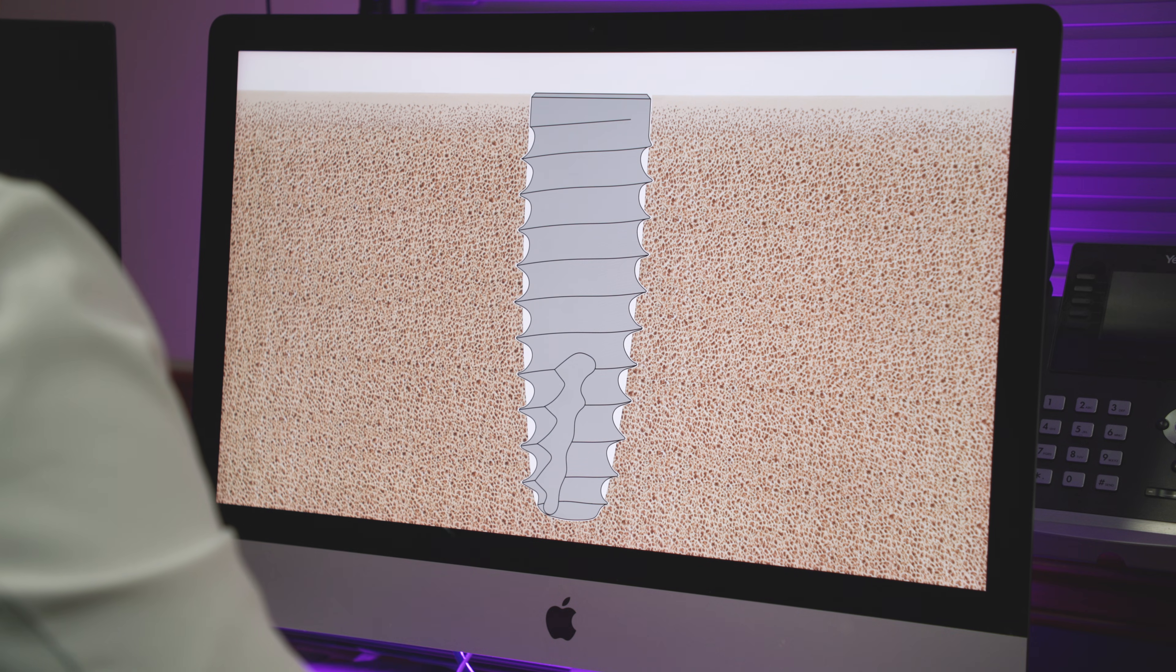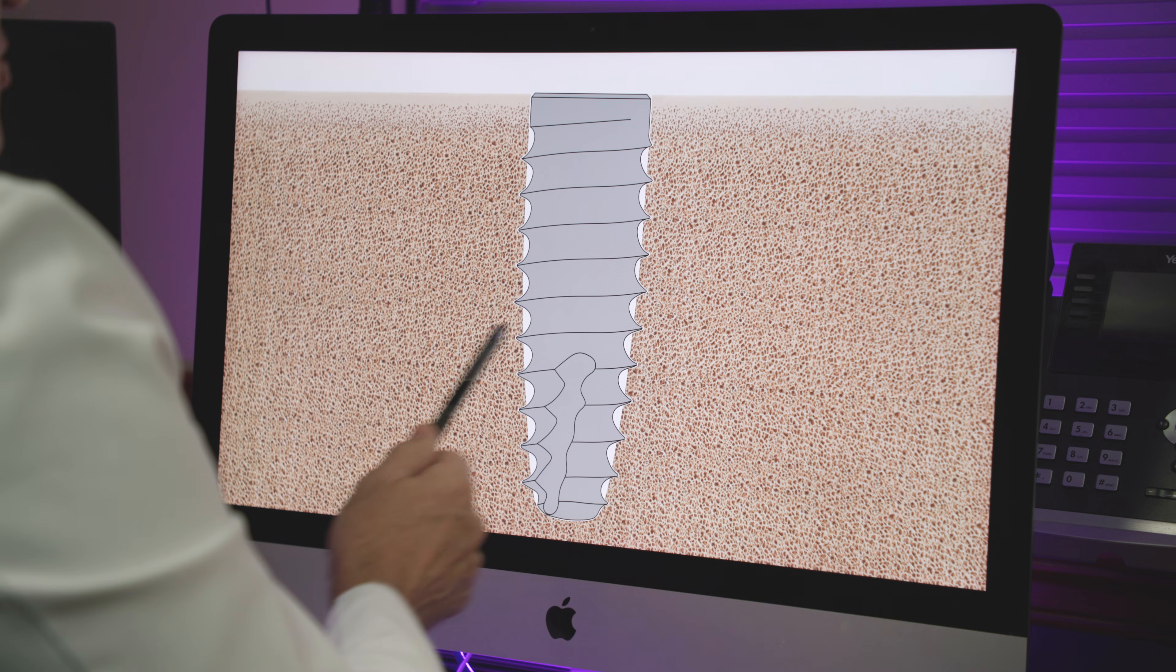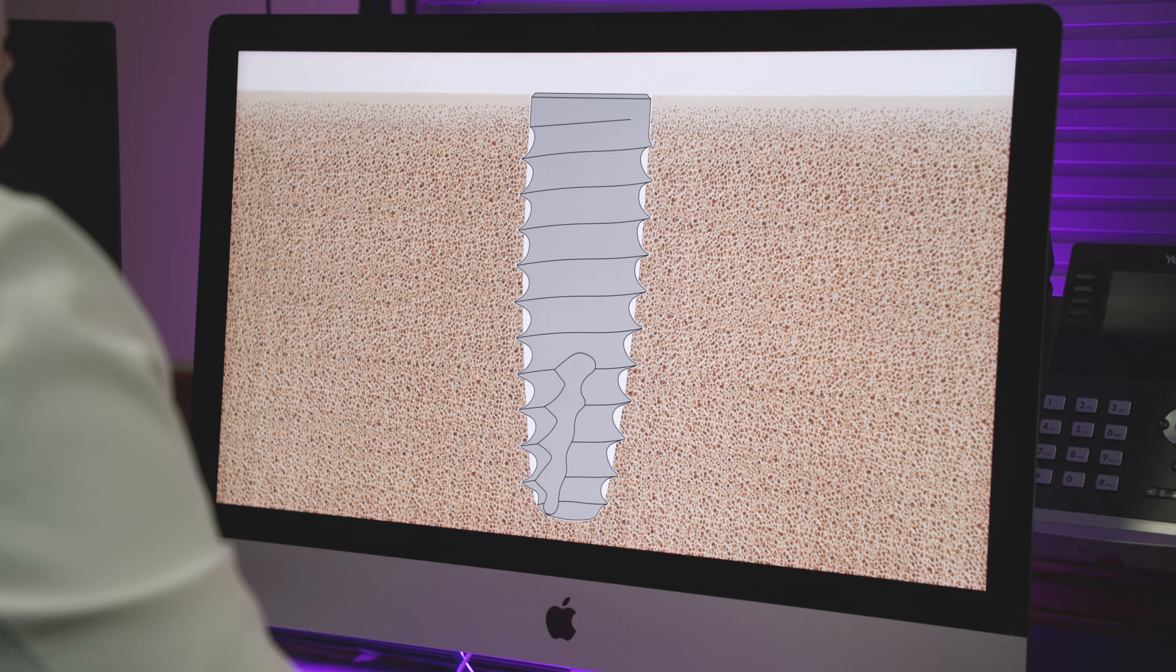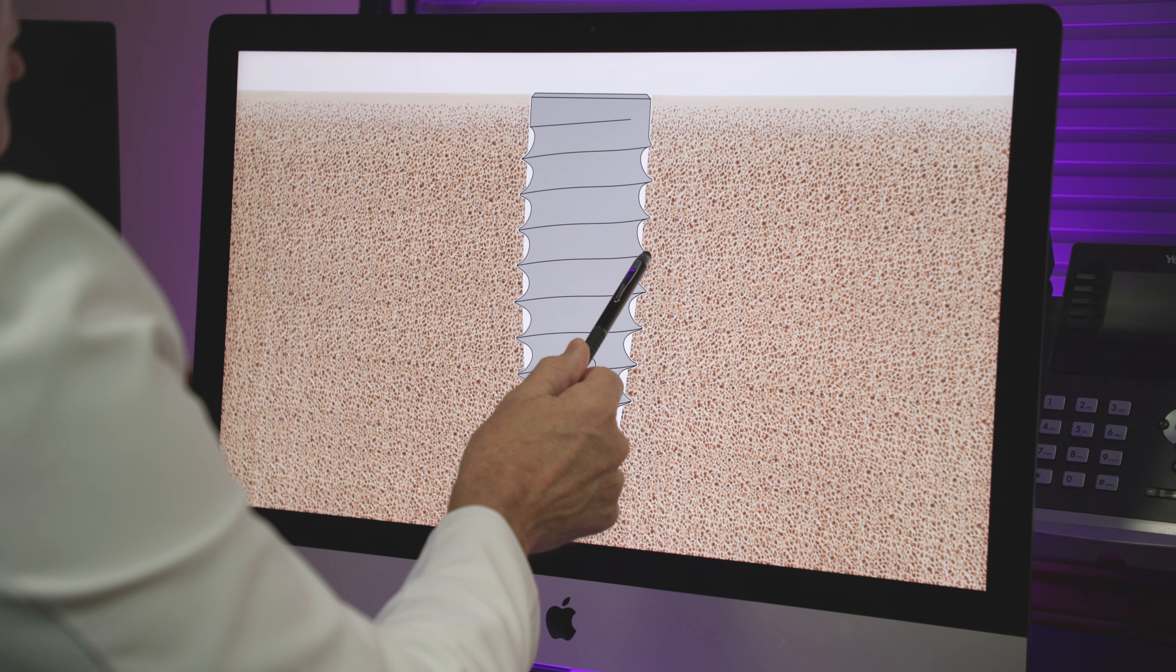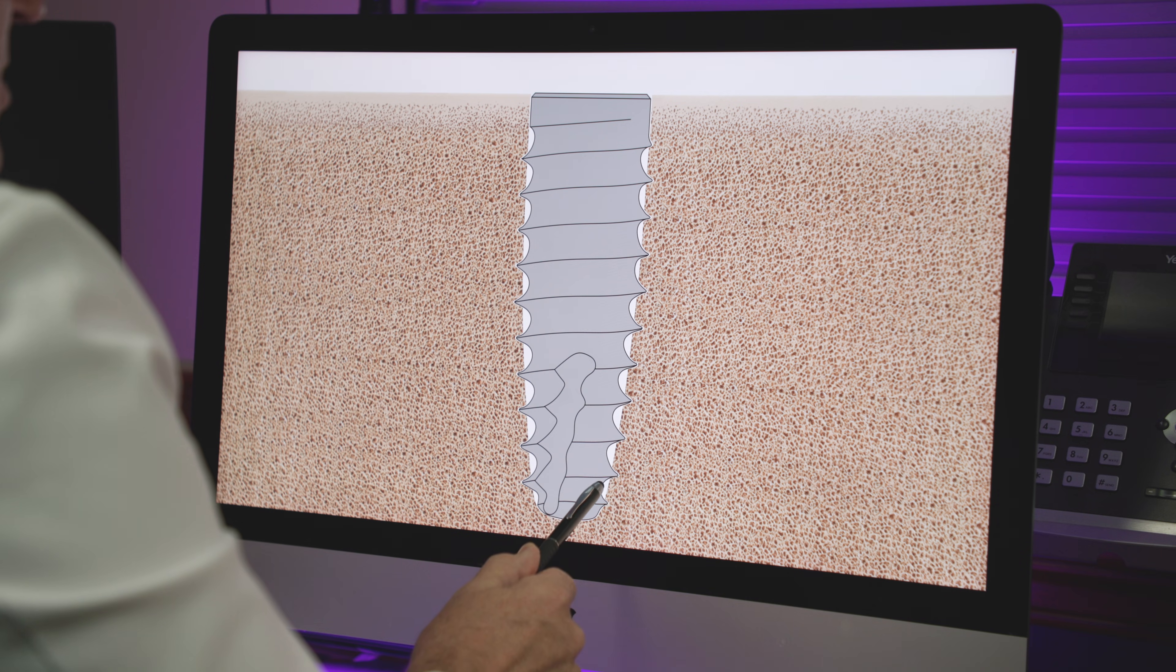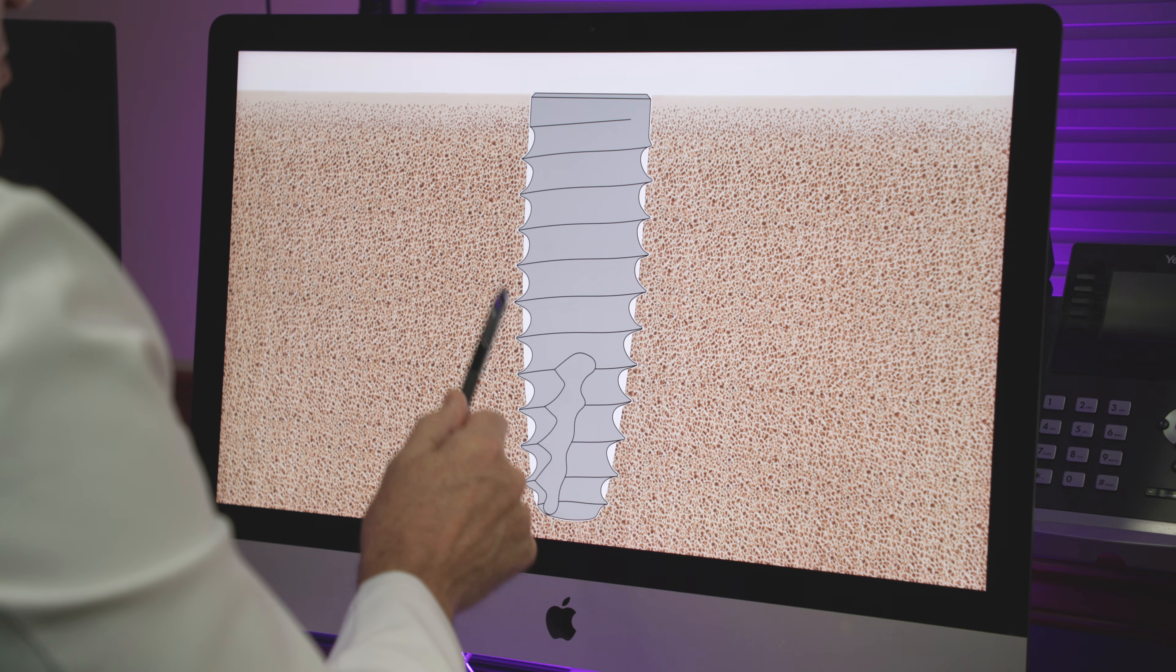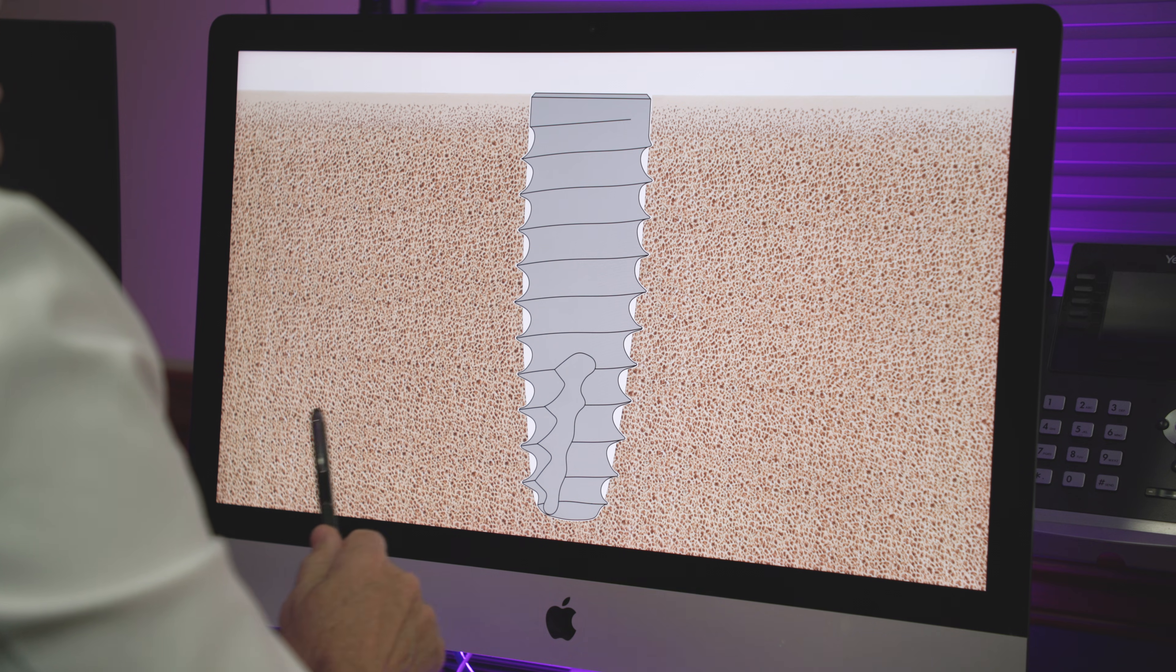So riddle me this. This implant has been inserted with what torque? And the answer is almost none. Almost zero torque. Because it didn't have to compress the bone because the bone was cut. There was a path for the threads to go in, so there's no compression here. So this implant would register during insertion maybe zero to five Newton centimeters of torque.